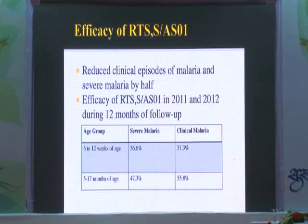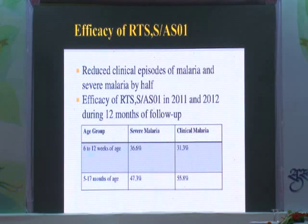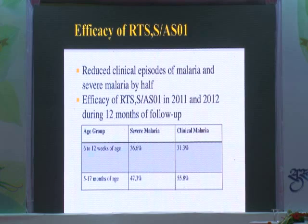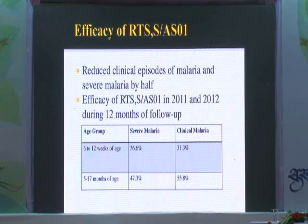Efficacy of RTS,S with ASO1 adjuvant — ASO1 is the adjuvant which enhanced the efficacy of the vaccine, developed by GlaxoSmithKline. In 2011 and 2012, during 12 months of follow-up: age group 6 to 12 weeks — in severe malaria 36.6%, in clinical malaria 31.3%. Age group 5 to 17 months — in severe malaria 47.3%, clinical malaria 55.8%.